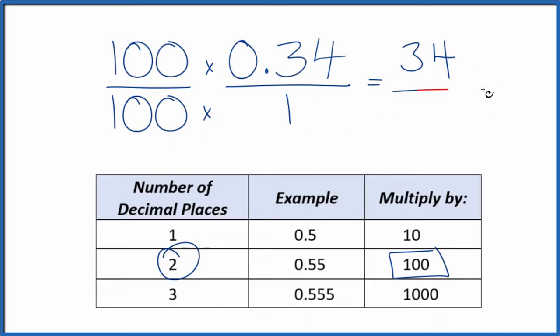100 times 1 is 100, and we have our fraction. We could reduce this a little bit further since they're both even numbers.